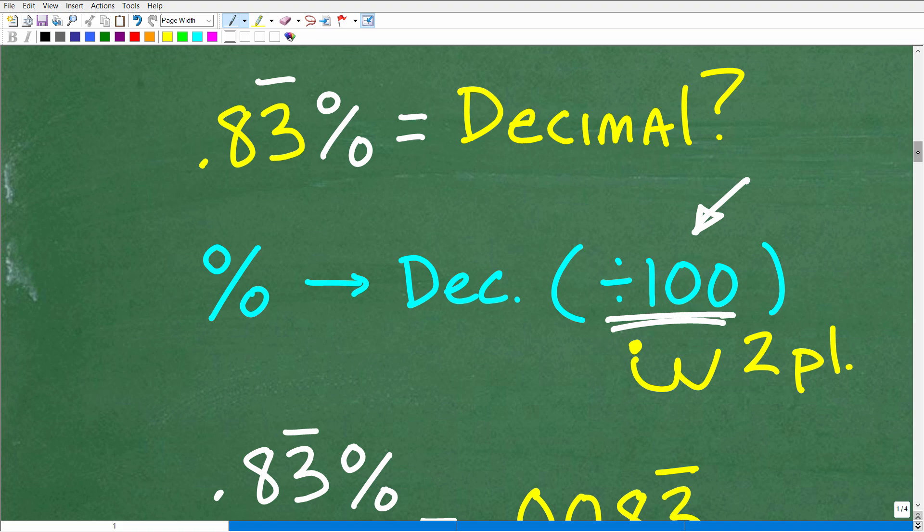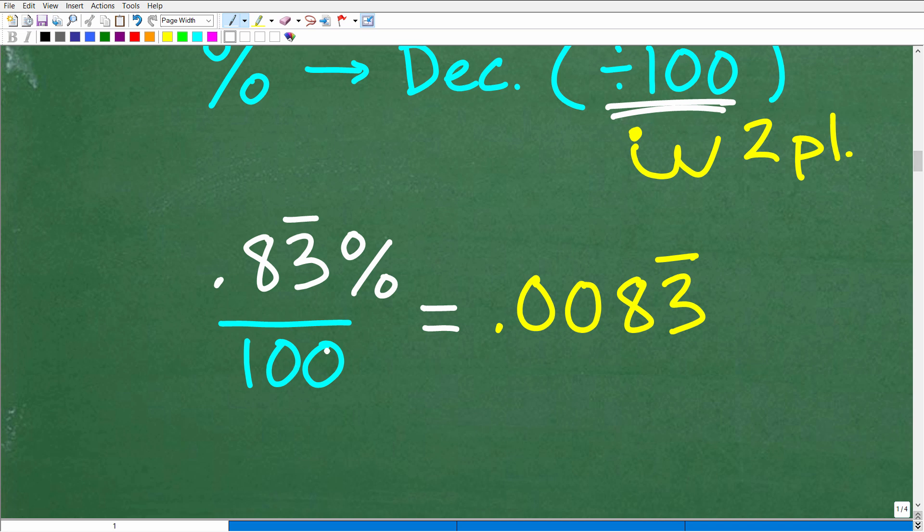So let's go ahead and do that now. So we have 0.83 percent. So all I need to do is divide that by 100. And when I divide 0.83 repeating, divide that by 100 in your calculator. And you can just put 0.833, put a bunch of threes after that eight if you want to kind of see how this works. Divide by 100, and you're going to get 0.0083. And then, of course, that three will be repeating. And this is the answer, 0.0083 repeating.